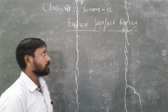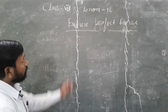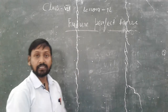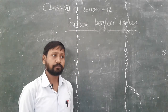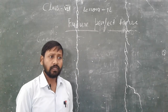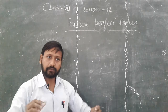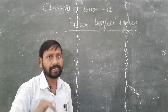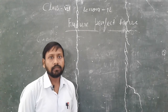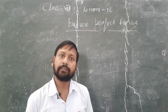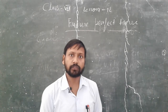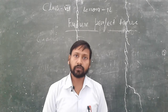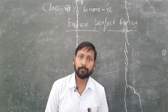In this chapter, my dear students, Future Perfect Tense means it tells one thing — that any action has been completed. It had been completed in the future. We are telling about those things where an action has been completed in the future. That is called Future Perfect Tense.